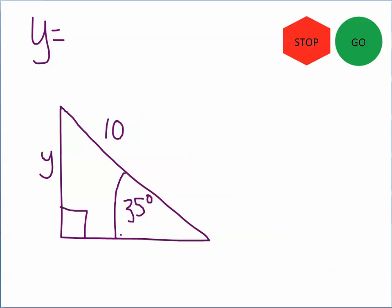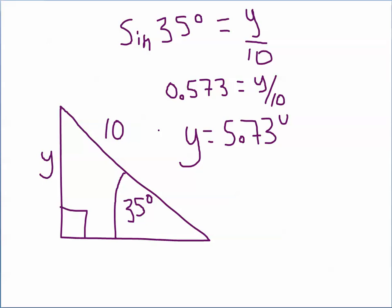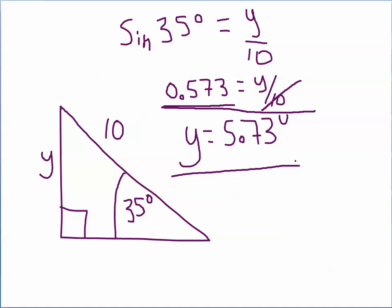All right, see if you can solve for y. Press on the stop sign. Okay, let's see how you did. We know it's 35 degrees, and we're looking for the opposite divided by the hypotenuse, so that's the sine function. The sine of 35 degrees equals y divided by 10. Pushing sine of 35 degrees on your calculator gives 0.573, correct to three decimal places. Multiplying both sides by 10 to cancel it out, y equals 5.73 units — whatever they are, could be inches, feet, miles.